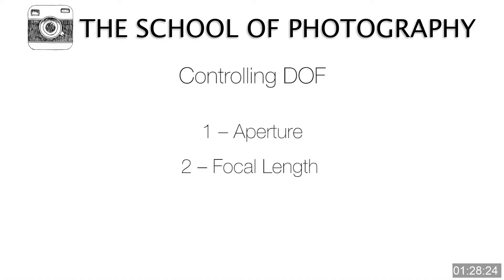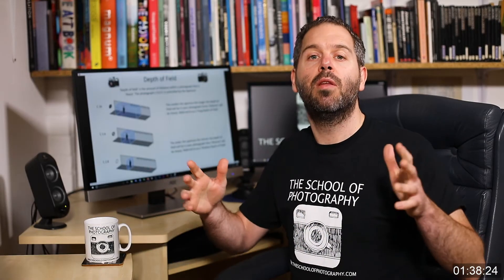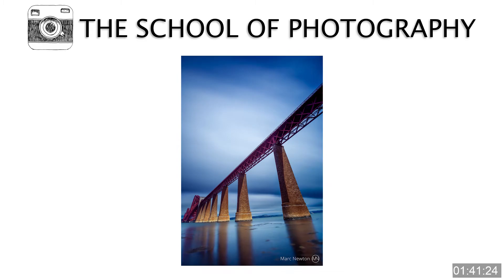The next thing that controls depth of field is your focal length. It breaks down like this: the more zoomed in you are, the shallower the depth of field you can get. The more zoomed out — wide angle — the longer the depth of field you can get.